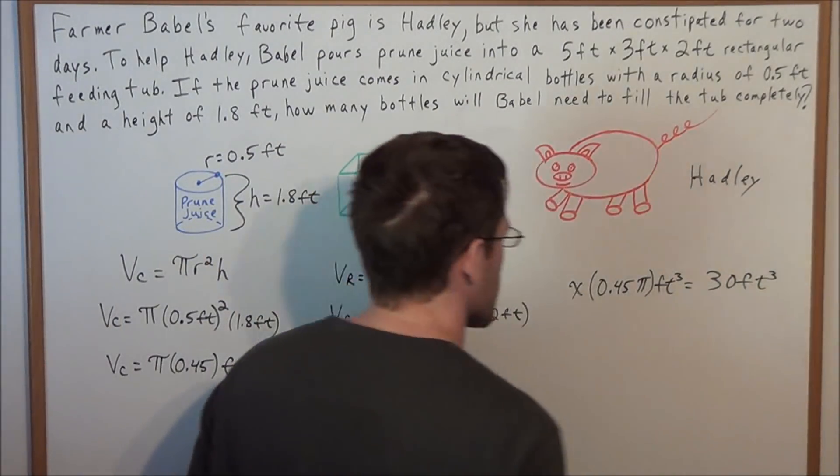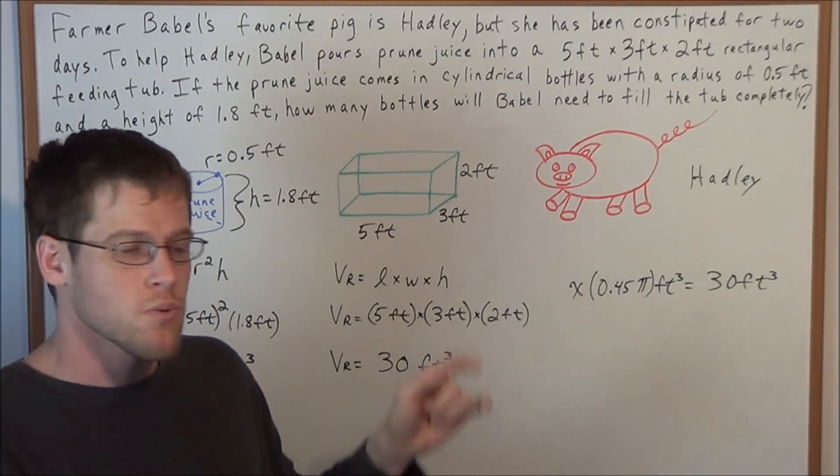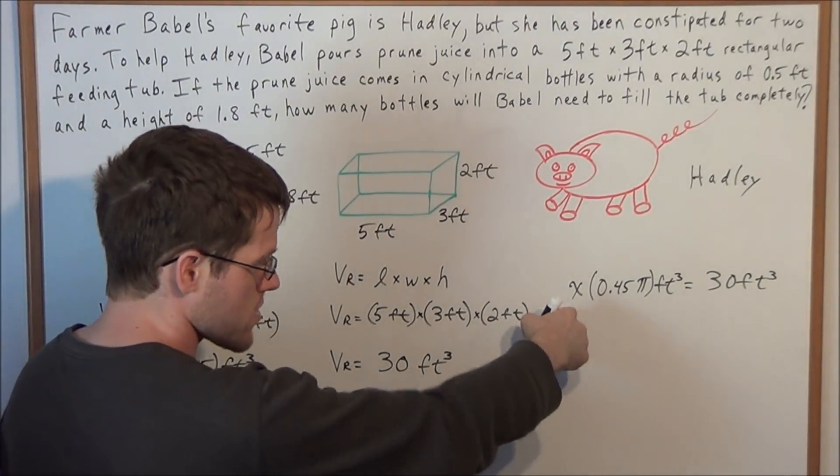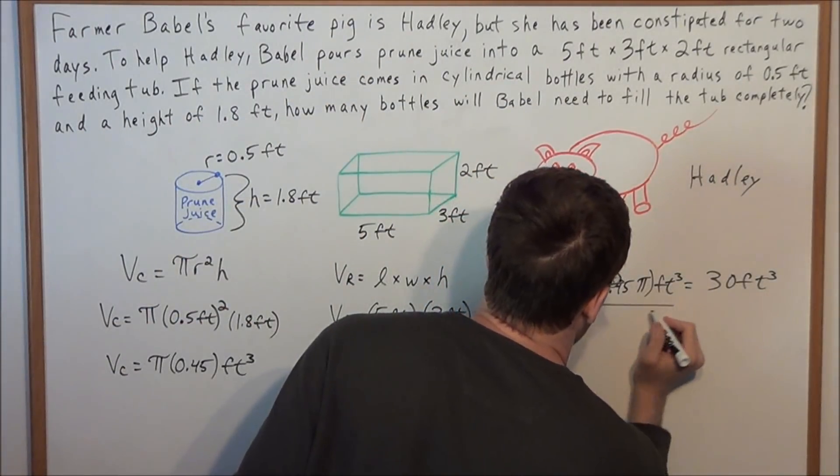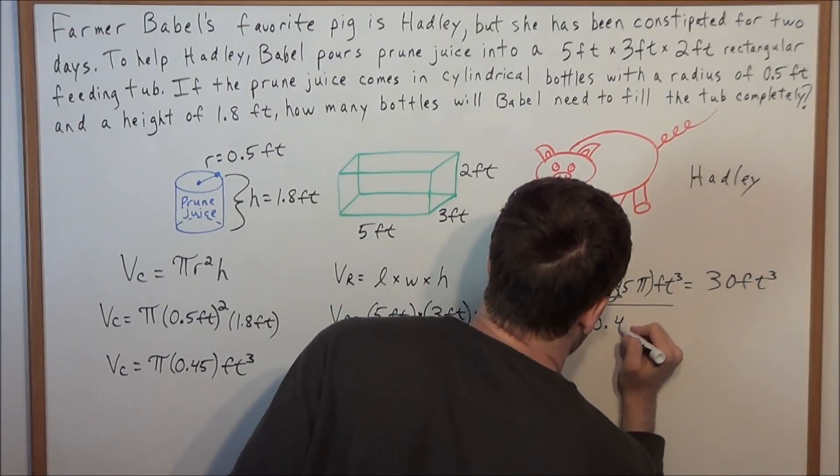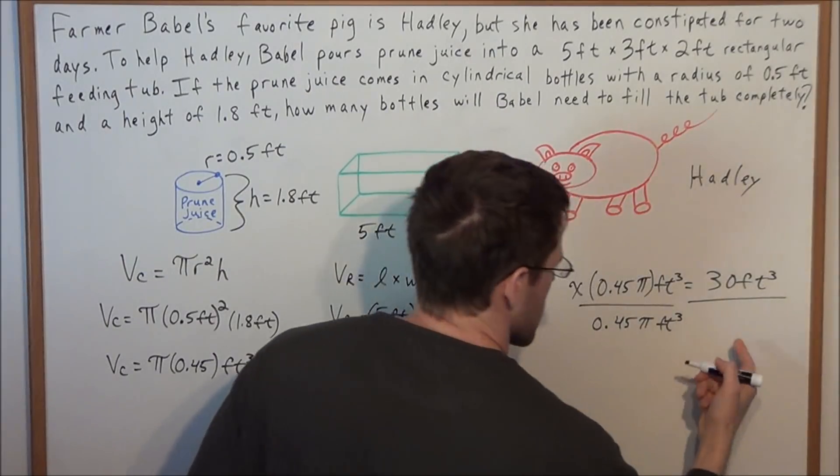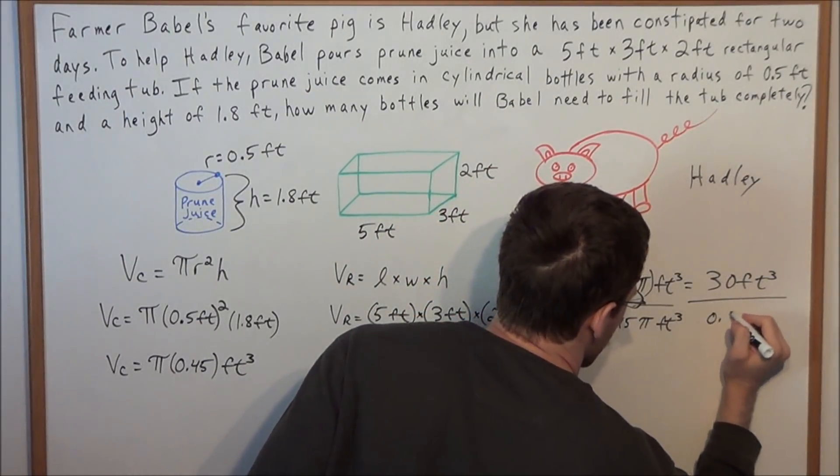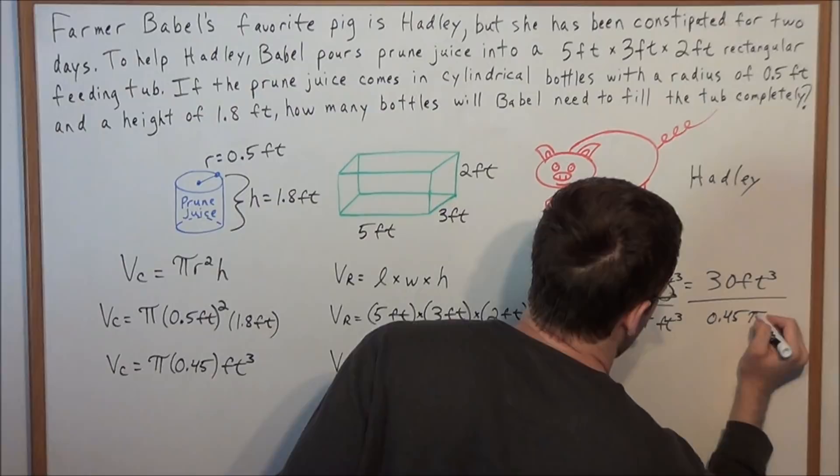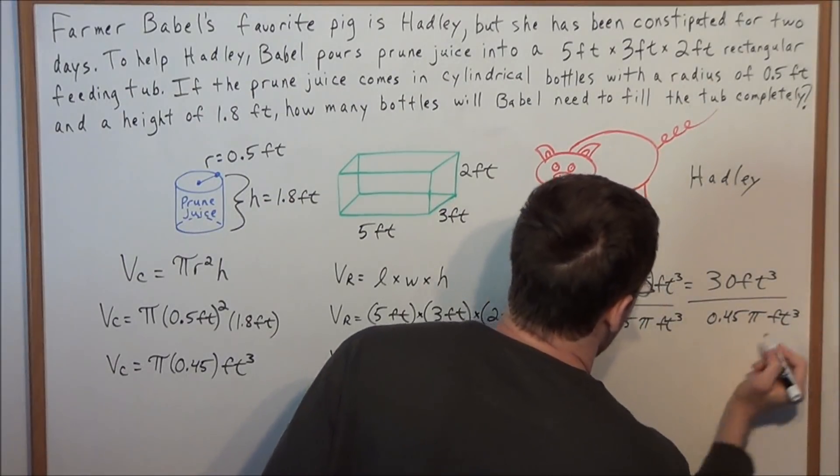So now the last step in this problem to find out how many bottles we're going to need, we're solving for x. We're just going to divide both sides by 0.45 pi cubic feet. And we're going to do the same thing on the right side, 0.45 pi cubic feet.